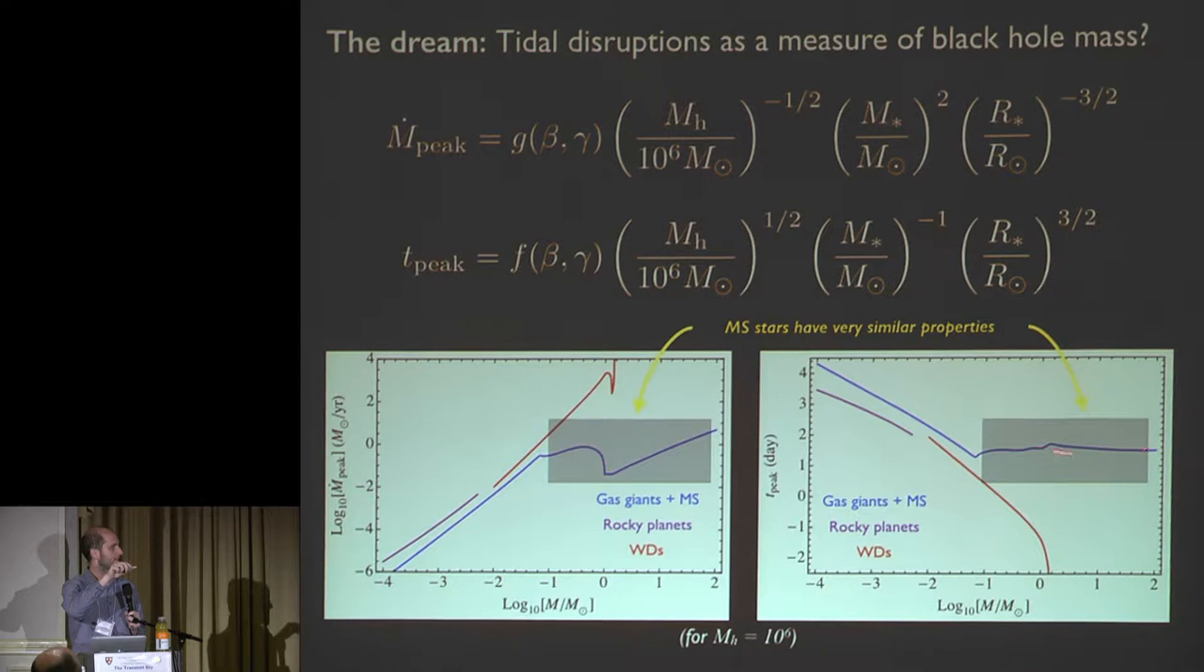And you end up with a very nice flat sequence of peak timescales from stellar masses ranging from a tenth of a solar mass to a hundred solar masses. So a thousand in stellar mass gives you timescales that vary by maybe a factor of two. So that means that actually, if you see a tidal disruption and you can measure the time of peak at the flare, in principle, it's possible to access the black hole mass without worrying too much about the other parameters.